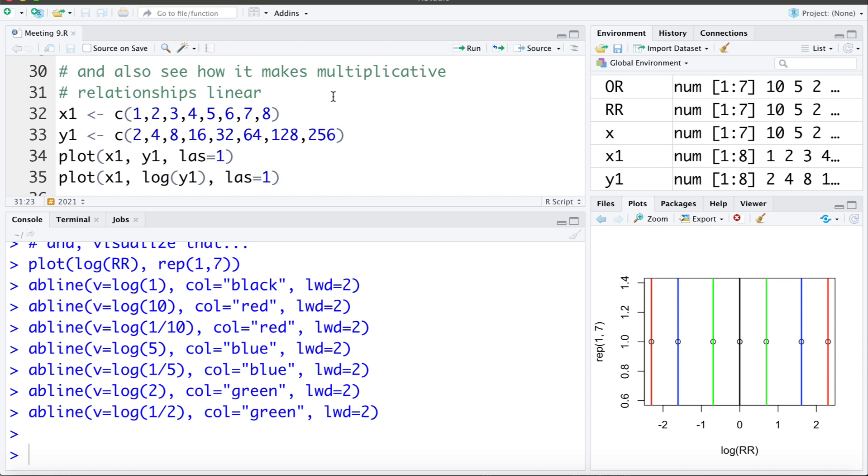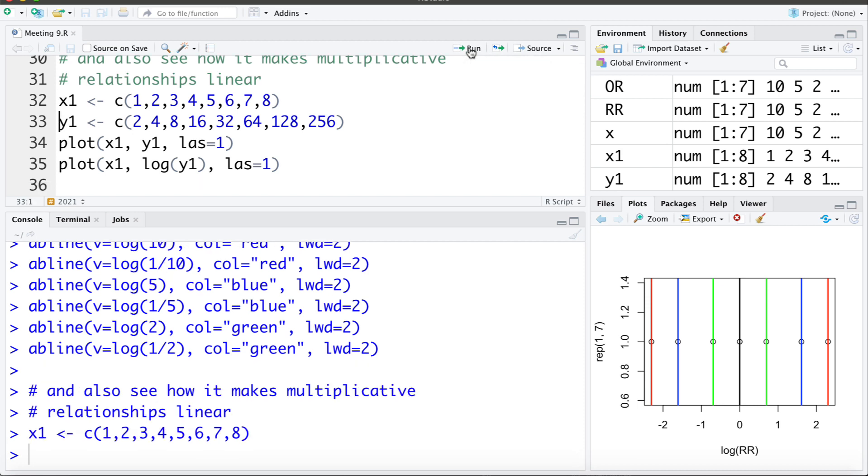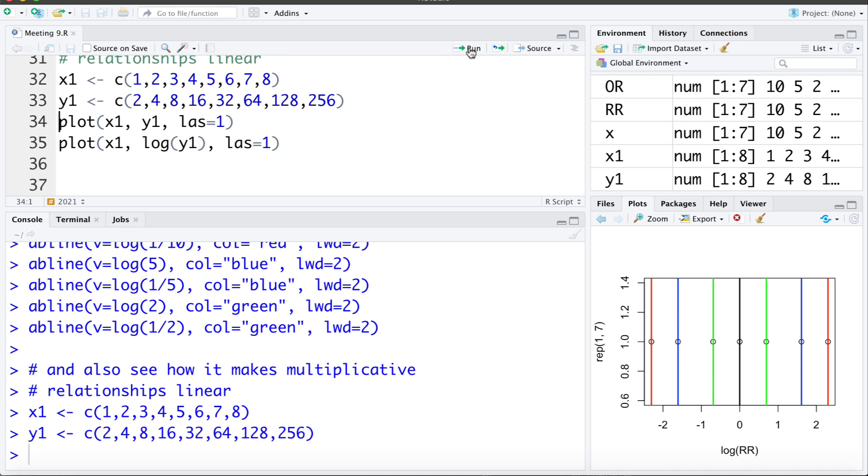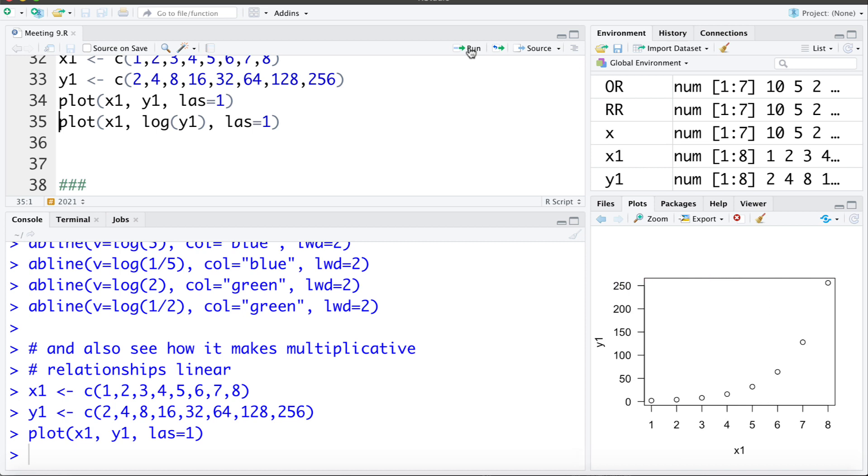One more look at how working with a log can transform something on a multiplicative or exponential scale to a linear scale. Here I'm creating an x variable from 1 to 8 and a y variable that's doubling each time: 2, 4, 8, 16, and so on. If we plot x versus y, we see this multiplicative or exponential growth.